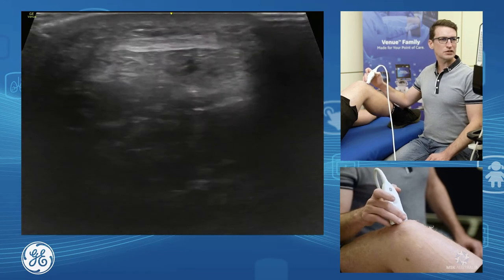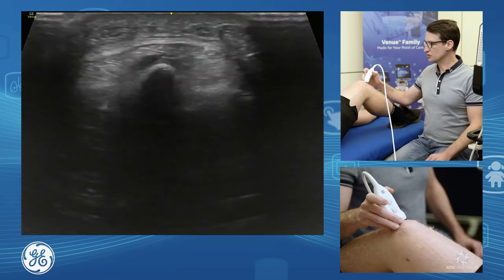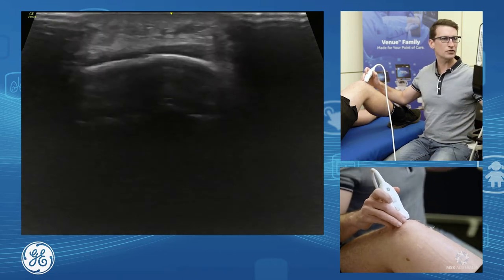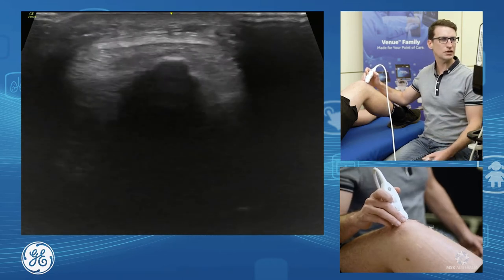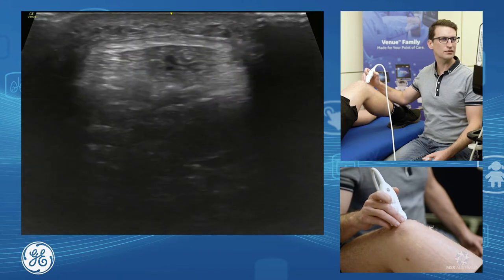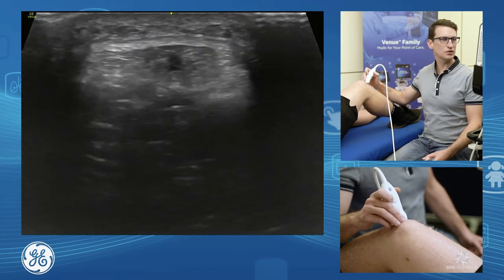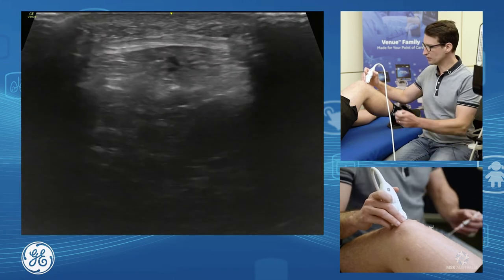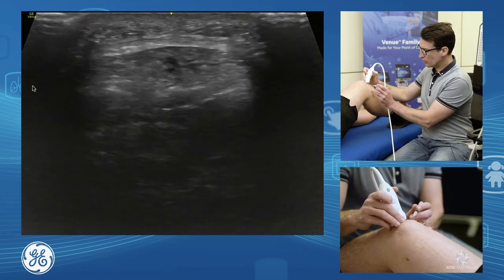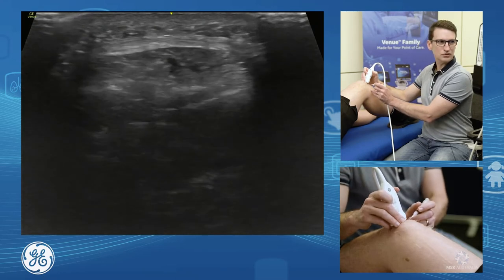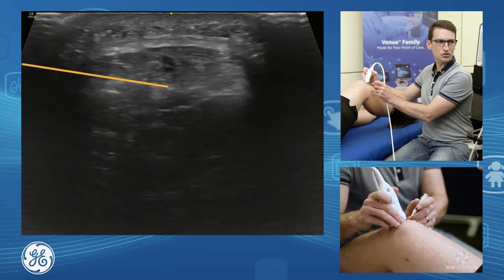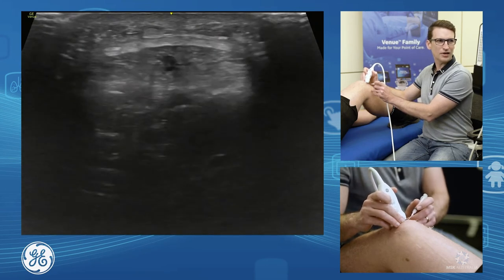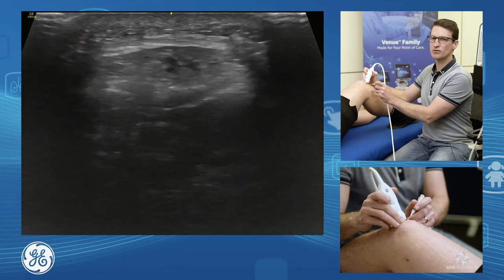Coming back up, we can see our Kager's fat pad sitting deep. When we see jumper's knee, we're occasionally asked to inject. I like to come from a lateral approach, with the tendon in short axis just coming off the patella, so we've got that tendon change in view. We're at about seven to eight millimetres down. We want to start below and just have our insertion in view, go underneath that patella, and just strip away that fat pad — that highly innervated fat pad — away from our patellar tendon.